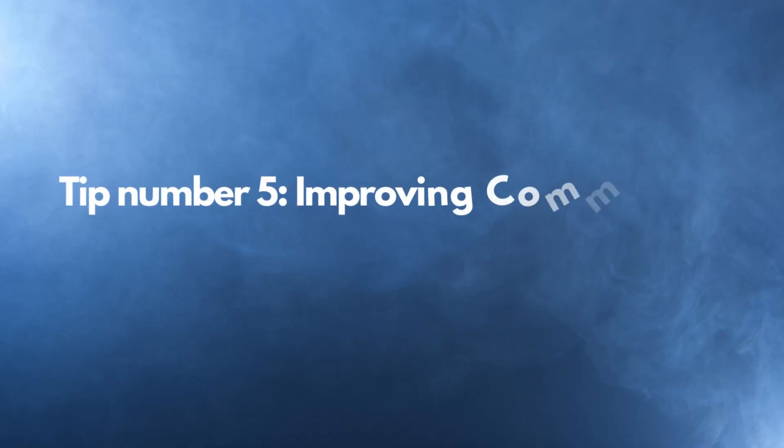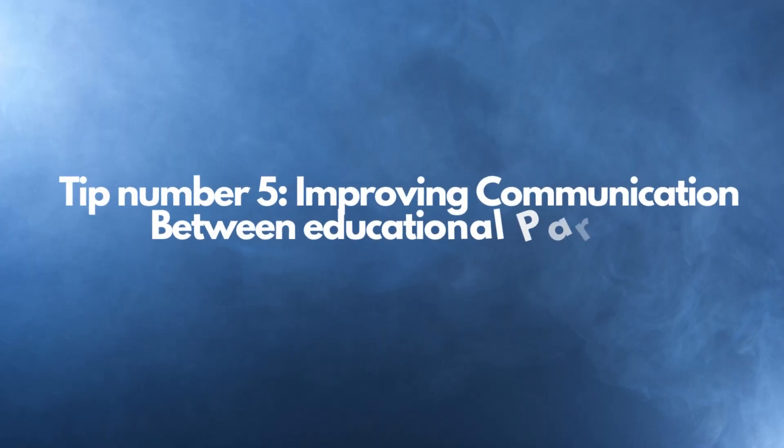Tip number five: improving communication between educational partners. Wouldn't it be amazing if you could improve your collective conversations and communication skills with your educational partners — teachers, parents, students, community partners, businesses — so that you increase what I call social capital? When you increase the social capital of a community and they start to work together and solve problems together, the academic achievement of students increases exponentially.